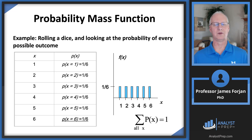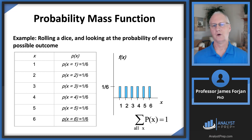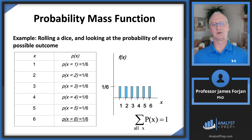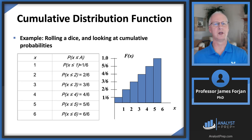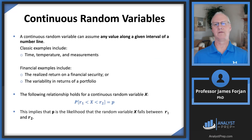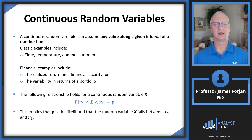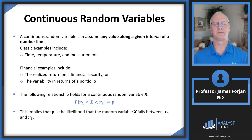When you roll a die, you can't roll a 1.5 or a 2.73 or a 4.6284 — you can only roll whole numbers, so you're discretely fixed. But a continuous random variable can take any value along an interval.